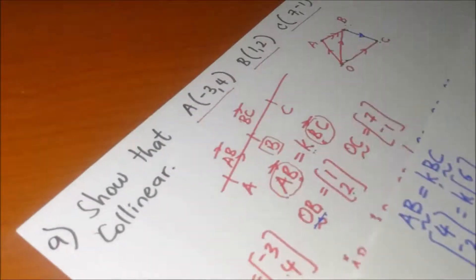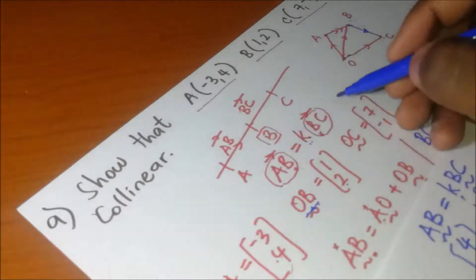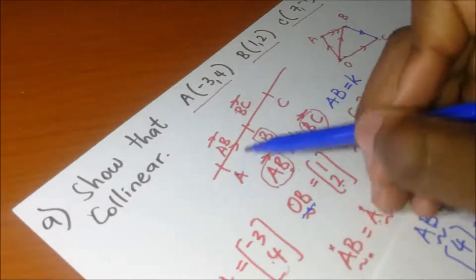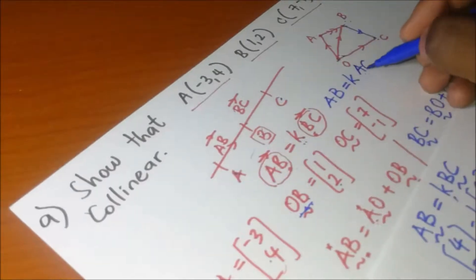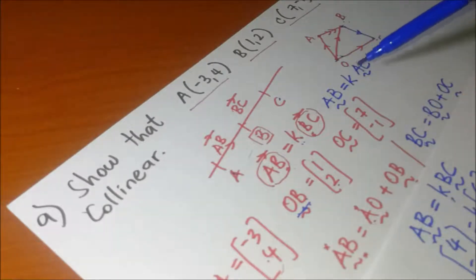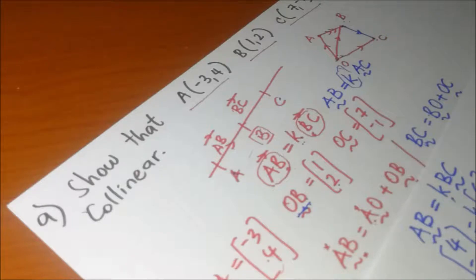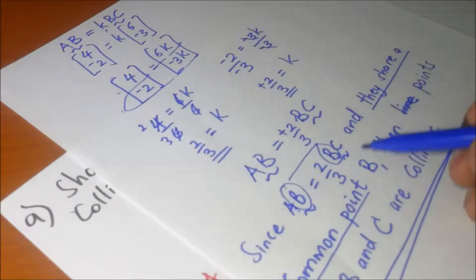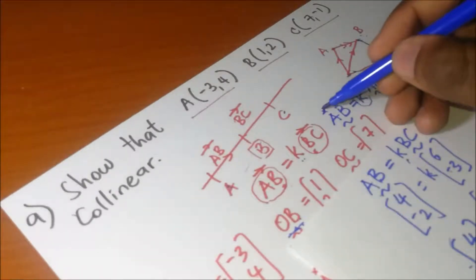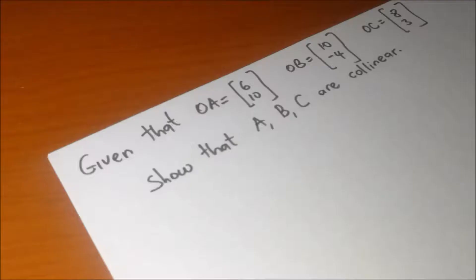There is another way to do this. Instead of writing AB = k·BC where B is the repeated common point, you can write AB = k·AC. In this alternative approach, the common point shared by the two vectors is A, not B. Either way, you find k and arrive at the same conclusion, but the shared point in your conclusion changes accordingly.